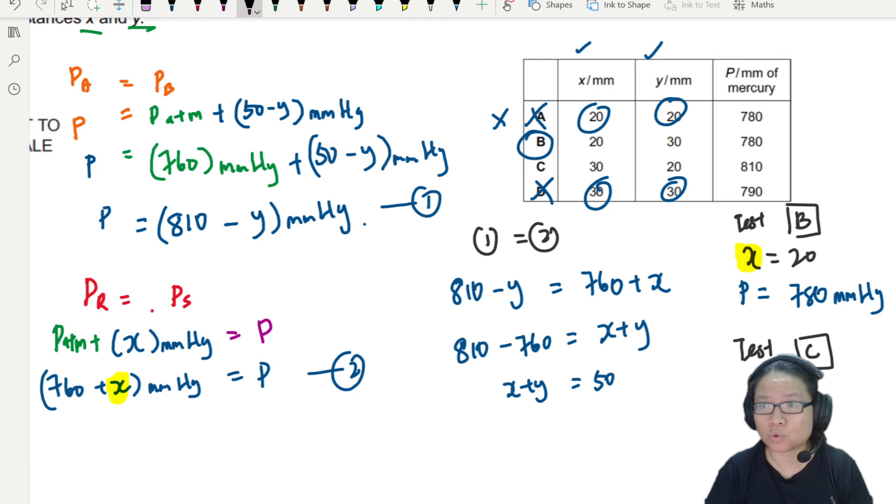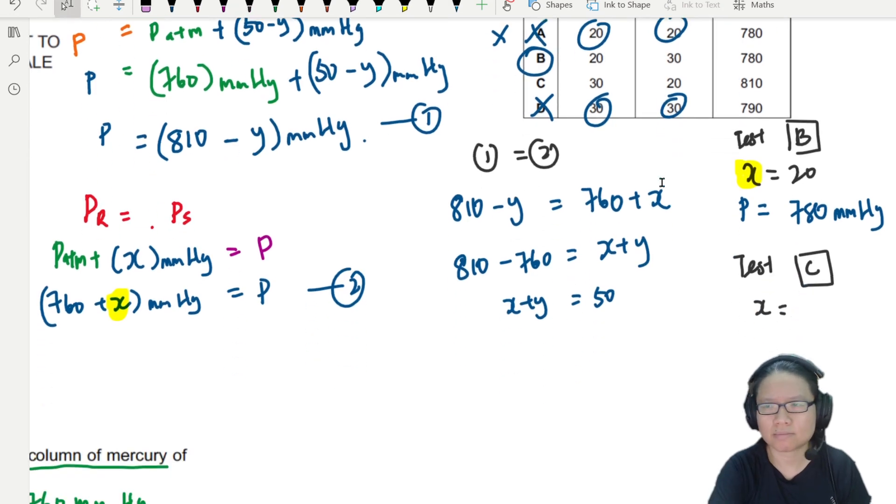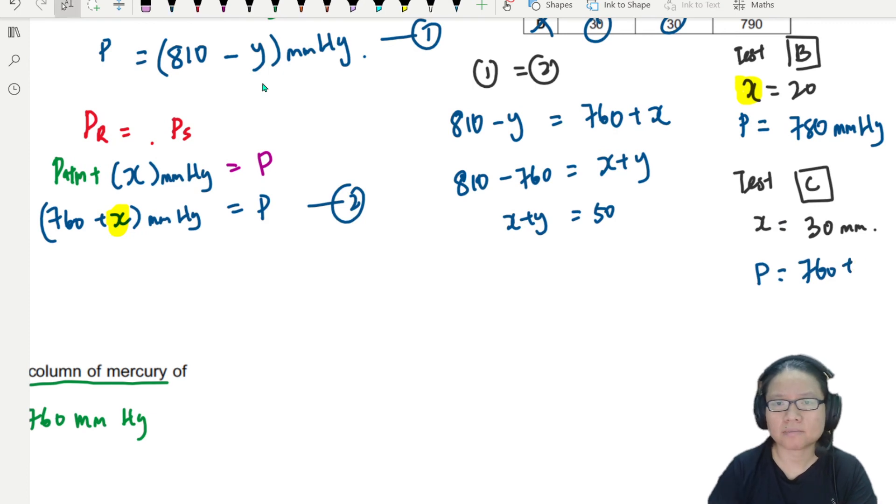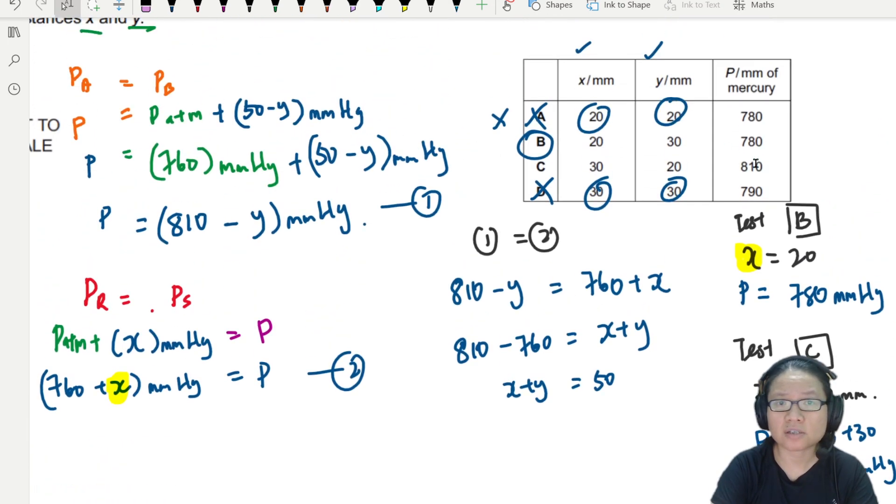Let's test C. For C, X is equal to 30 mm. So if you put into equation 2, P will be 760 plus 30, this is 790. Is this answer 790? Nope. So this is wrong. Because this one is supposed to be 790. So your answer is B.